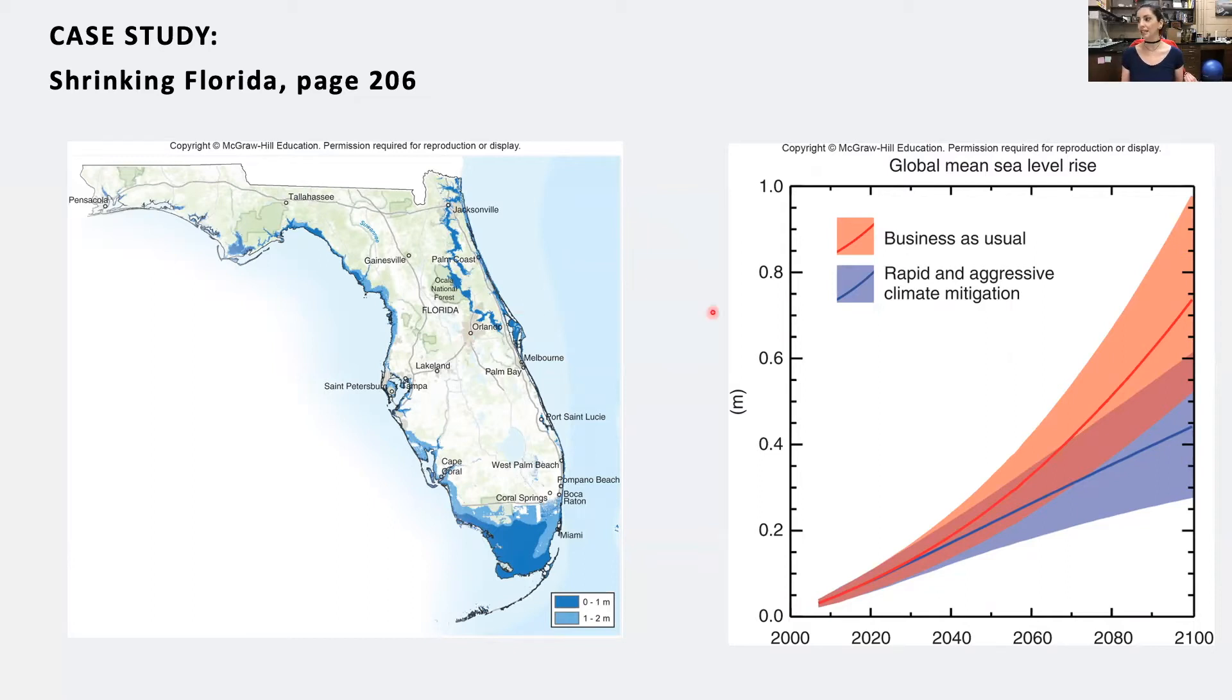It's estimated that by 2050 another 10 inches of sea level rise is expected, and by 2100 sea level is expected to be one entire meter higher than some conservative estimates. We can take a look at the projected global mean sea level rise depicted from 2020 through the future in terms of meters. Under business as usual, meaning we don't take any proactive steps to mitigate climate change or reduce carbon emissions, we're expected to see about 0.7 meters in increased sea level by 2100.